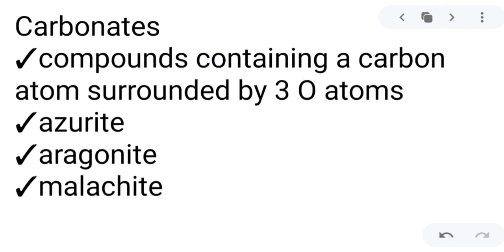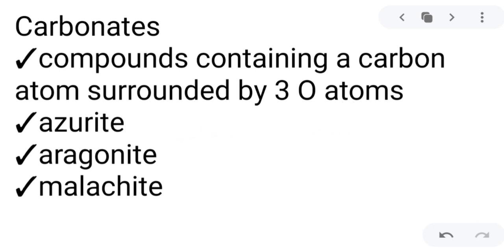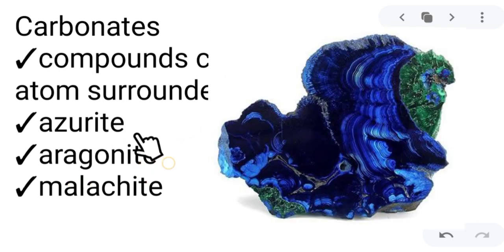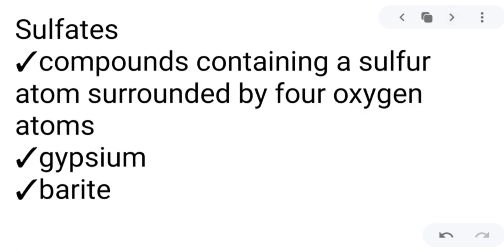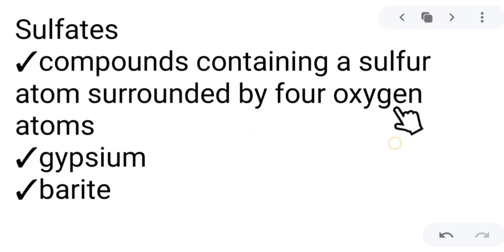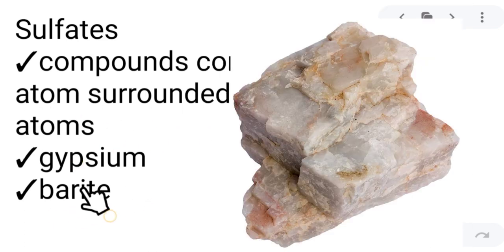Then we have carbonates — a group of minerals or compounds containing a carbon atom surrounded by three oxygen atoms. Examples are azurite, aragonite, and malachite. And last, we have sulfates — minerals or compounds containing a sulfur atom surrounded by four oxygen atoms. Examples are gypsum and barite.